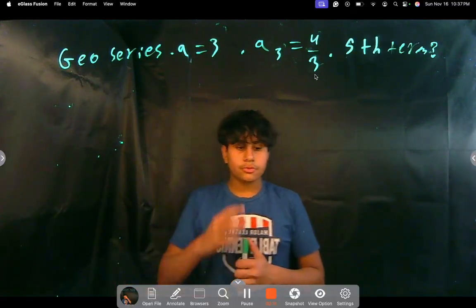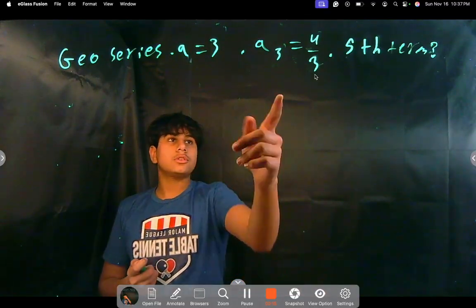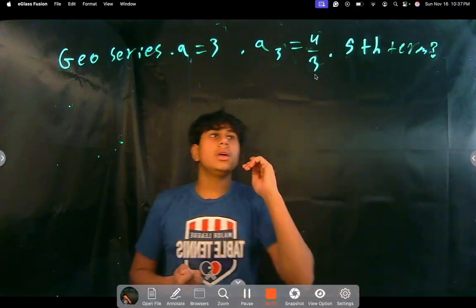We're given a geometric series where the first term a is 3 and a sub 3 is 4 thirds, and we're asked to find the 5th term. So the 3rd term is 4 thirds, we know the first term, 5th term.